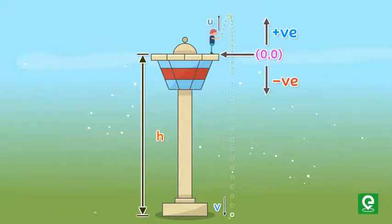Since the bottom of the tower is below the origin, therefore we will consider the height of tower as negative h. The ball is thrown in the upward direction which is above the origin, therefore we will consider initial velocity as positive u. Acceleration due to gravity is always negative because it will always act in downward direction.